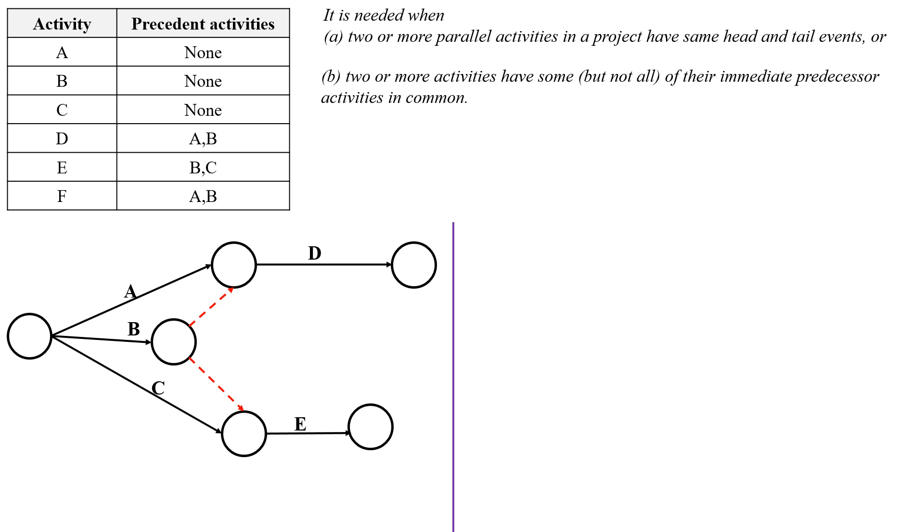Next one is activity F. Activity F will start immediately after completion of activities A and B. So draw the activity F like this. It represents the activity F will start after completion of activities A and B.